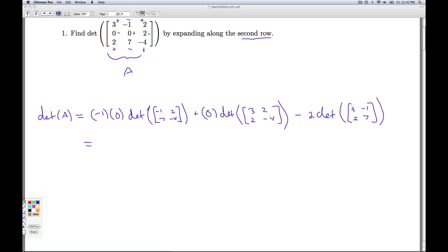All right, simplify, 0, 0, fine. Negative 2 times, what's the determinant of this 2 by 2 matrix? You take the 3 times the 7 and subtract what you get, 2 times negative 1. So 3 times 7 is 21 minus negative 2. 21 plus 2 is 23. 23 times negative 2, negative 46. So the determinant of A is negative 46. And that's how you get it by expanding along the second row.